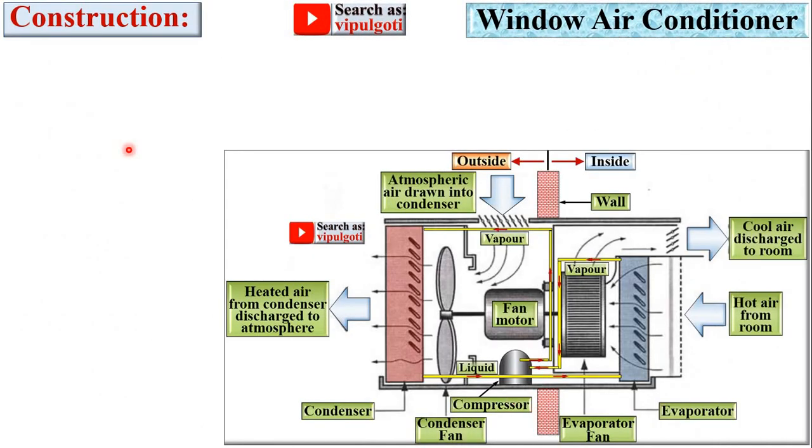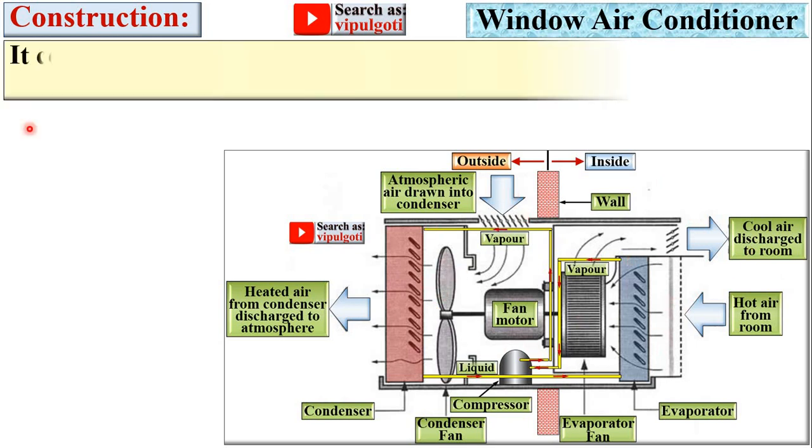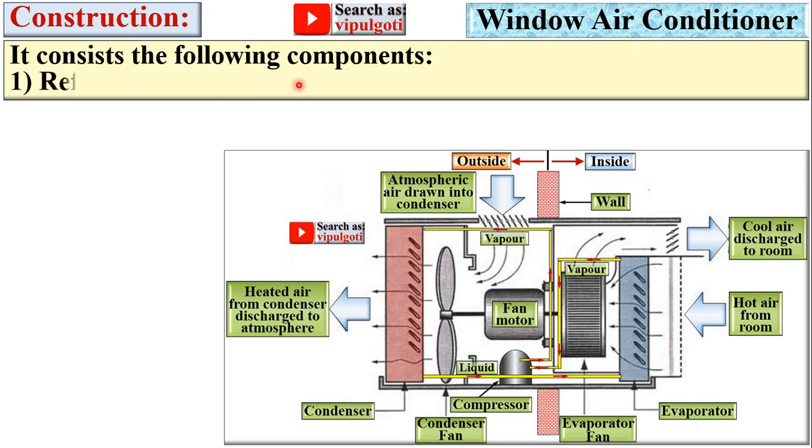Now the construction of the window air conditioner. So this is a very important figure and same figure you can use in the examination. It consists of the following components: refrigeration unit and supporting unit.